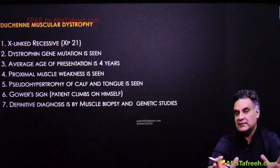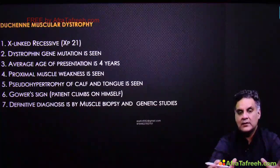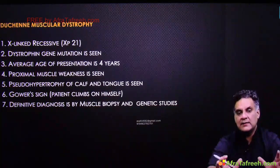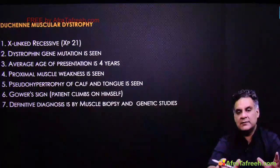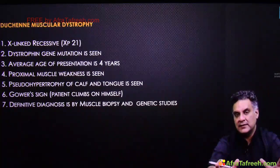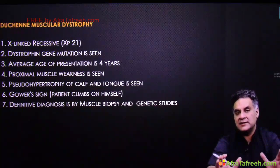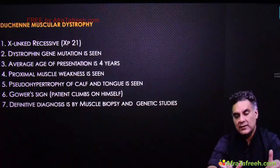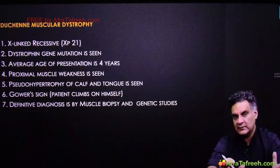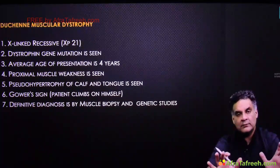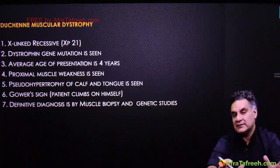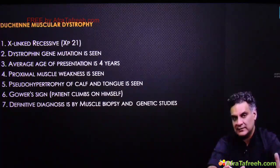Proximal muscle weakness is present. Pseudo-hypertrophy of calf and tongue is seen. The patient climbs on himself. Diagnosis is by muscle biopsy and genetic studies. The most common nerve used for biopsy is the sural nerve. The most common muscle used for biopsy is vastus lateralis.